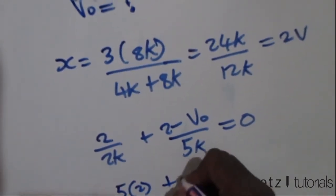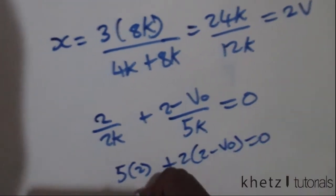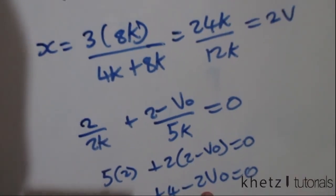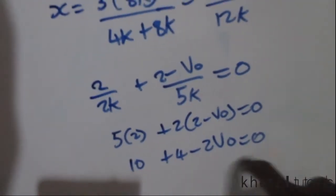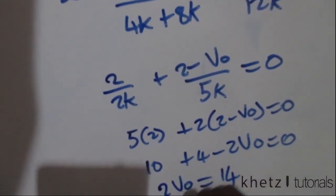Multiplying through by 10k you're going to have 5 times 2 plus 2 times 2 minus 2VO equals 0. That's 10 plus 4 minus 2VO equals 0. Taking the negative 2VO to the other side gives 2VO equals 14.